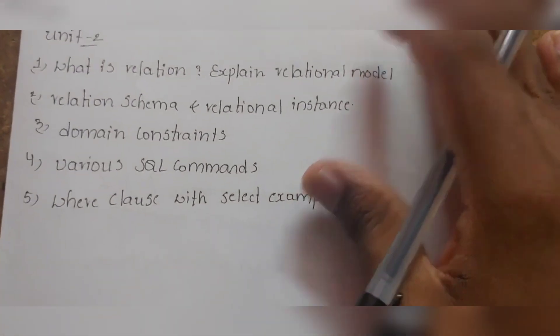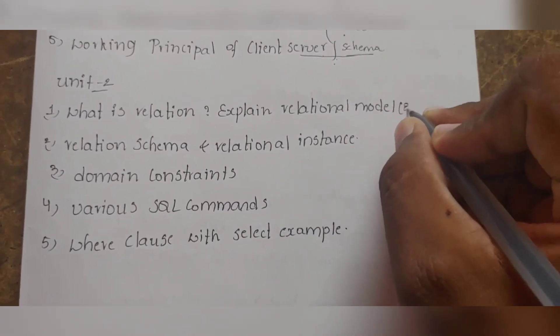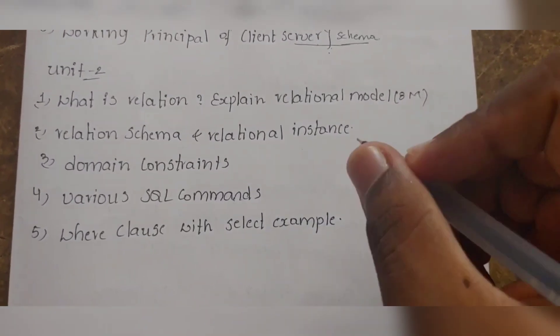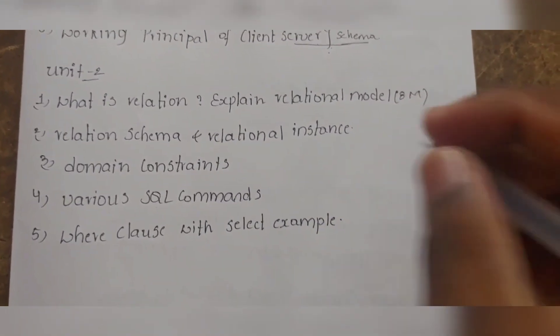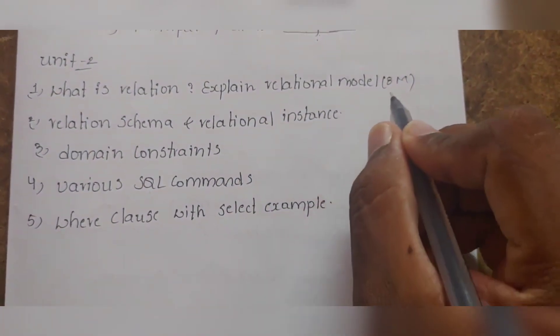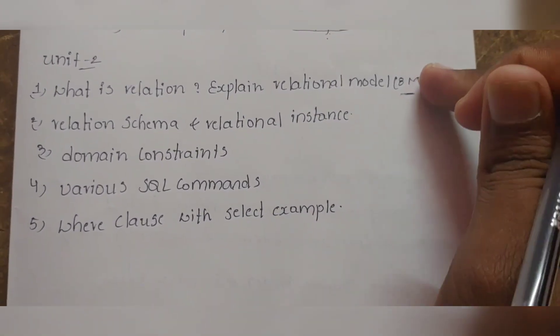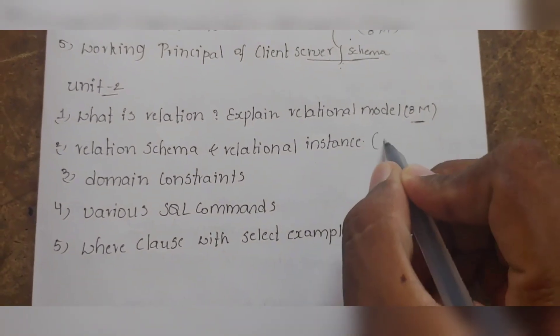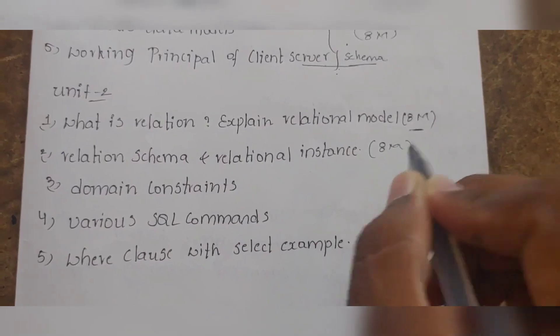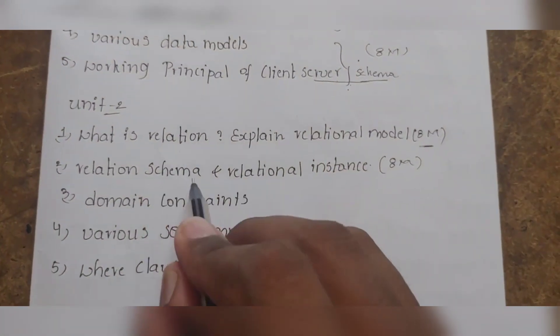What is relation? Explain relational model - this is 8 marks for R20. The next one is relational schema and relational instance. This is an R20 question.